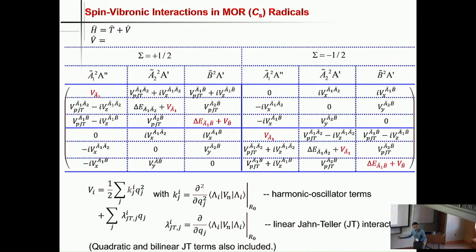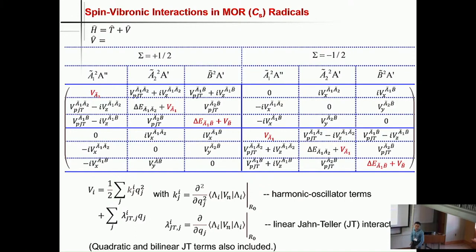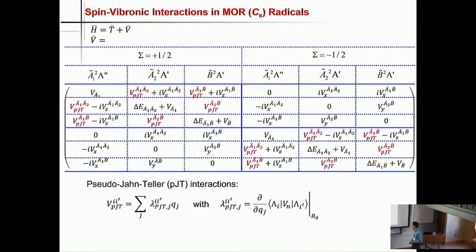When you expand the potential energy part at the normal coordinates, you have the harmonic oscillator part, proportional to Q squared, but you also have linear vibronic coupling — we call that the Jahn-Teller effect, or linear Jahn-Teller effect to be exact. Ironically, linear molecules do not have a linear vibronic interaction, as Lan showed. We also included quadratic and bilinear vibronic interaction terms in the spectroscopic model, although not shown here for clarity.